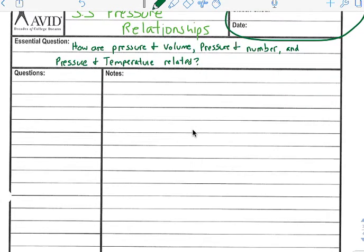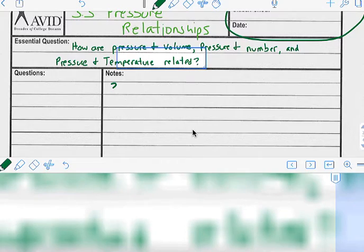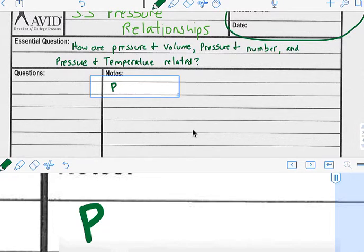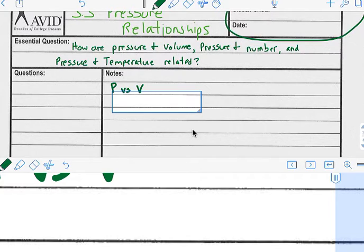So the first one we're going to talk about is pressure. Let me zoom in. All right, I can write prettier this way. Pressure versus volume. P for pressure, V for volume.